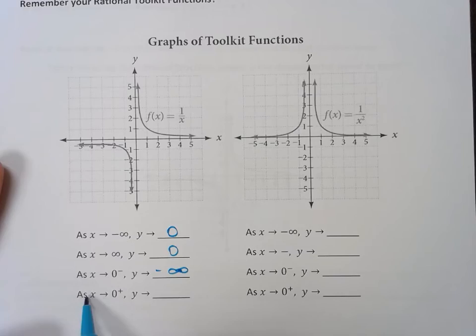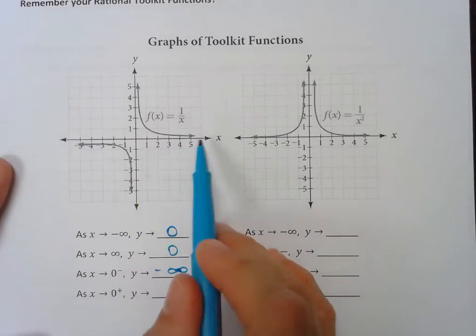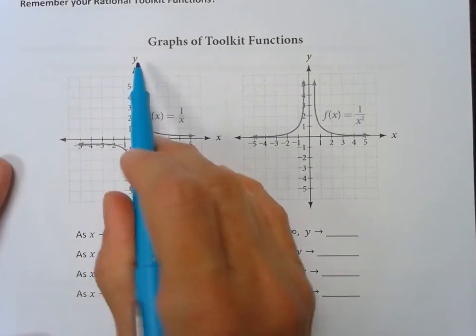As x is getting closer and closer to zero from the right, y is going up. So y is going to positive infinity.